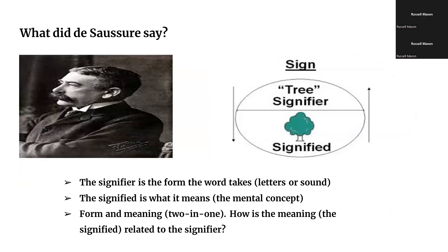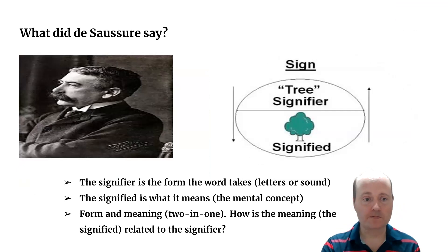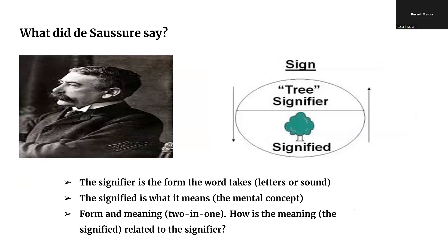De Saussure is most famous for his idea that the sign combines two parts. The first part is called the signifier — in language, this is a series of letters like T-R-E-E, or the sound of the word 'tree.' This is the form the word takes. The second part is the signified — what it means, the mental concept. It's a two-in-one relationship: form and meaning.